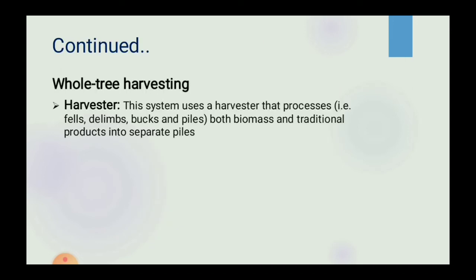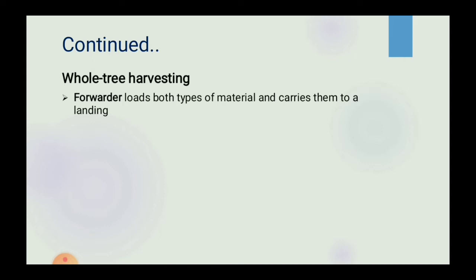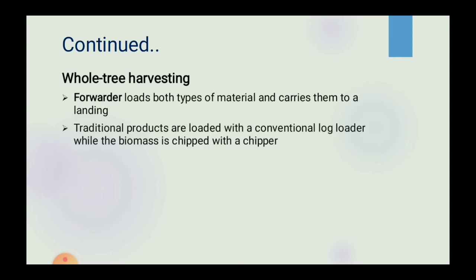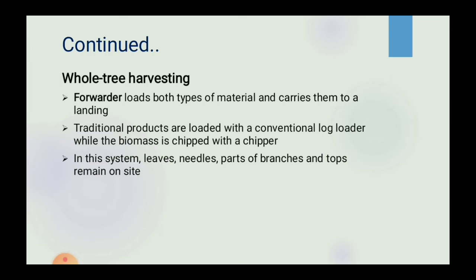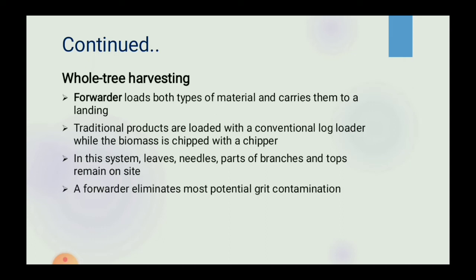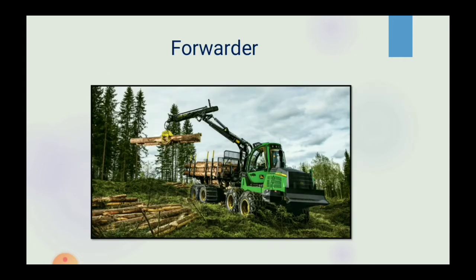A chipper is shown chipping biomass into the chip van. The harvester system uses a harvester that processes — i.e. fells, delimbs, bucks and piles — both biomass and traditional products into separate piles. The harvester loads both types of material and carries them to the landing. Traditional products are loaded with a conventional log loader while the biomass is chipped. In this system, leaves, needles, parts of branches and tops remain on the site. A forwarder eliminates most potential grit contamination.